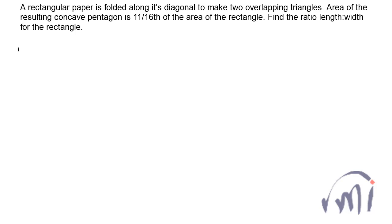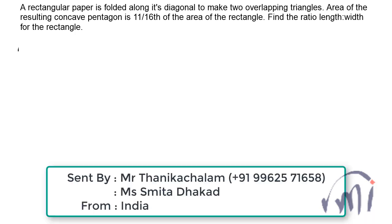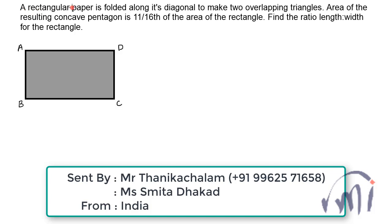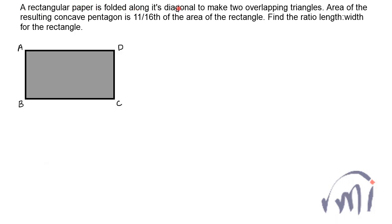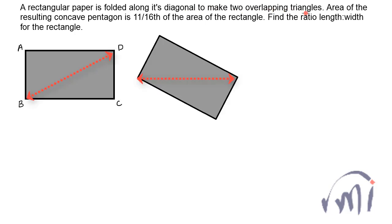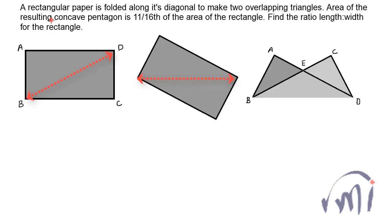Here we have a problem which was sent by Mr. Thanika Chalam and Ms. Smita Dhakar from India. In this problem we have a rectangular paper which is folded along its diagonal to make two overlapping triangles. The area of the resulting concave pentagon is 11/16th of the area of the rectangle, and we have to find the ratio between length and width of the rectangle. Suppose this is the paper whose length is L and width or breadth is denoted as small b.